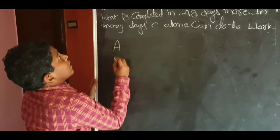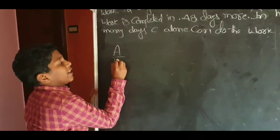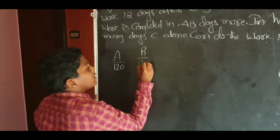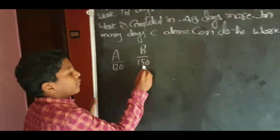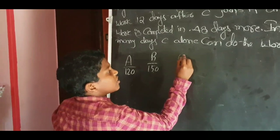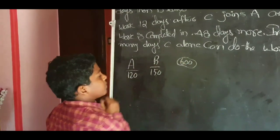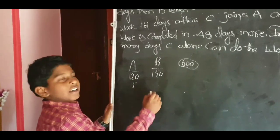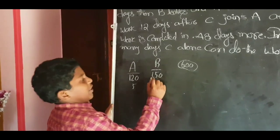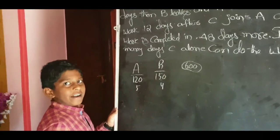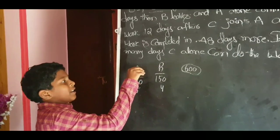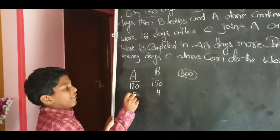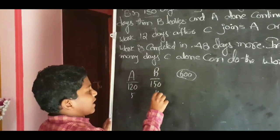A can do a piece of work in 120 days and B can do a piece of work in 150 days. The LCM of 120 and 150 is 600. So the total work is 600 units. For a day, A is taking 5 units. For a day, B is taking 4 units.